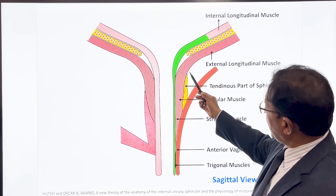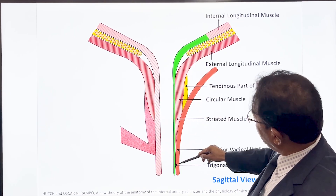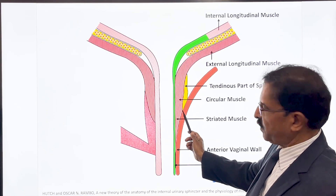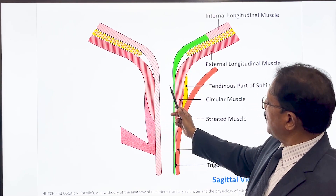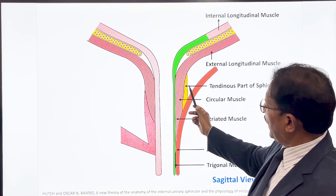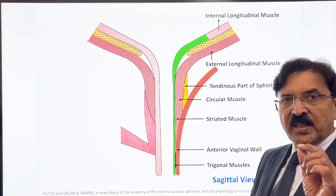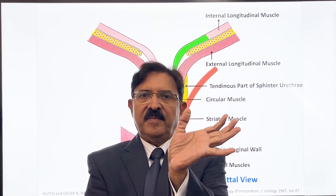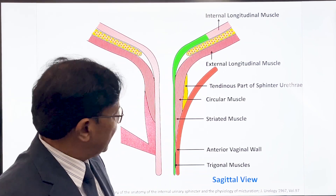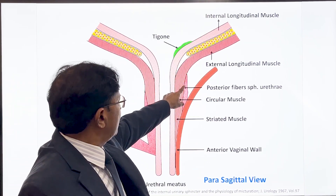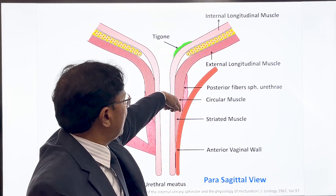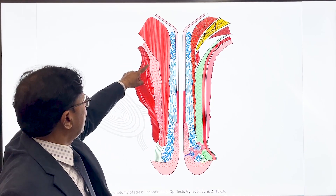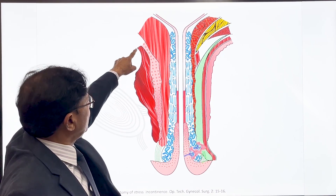When the rhabdosphincter goes sideways and posteriorly, the vaginal layer is fused there, so skeletal muscle fibers have no space. The skeletal muscle fibers course upwards and backwards and meet in the midline in a tendinous part posteriorly — the rhabdosphincter comes back and gets attached posteriorly in the midline in a very thin tendinous part. In a parasagittal section you can distinguish the smooth muscle from the skeletal muscle.